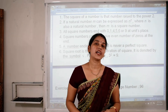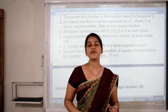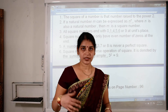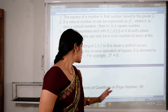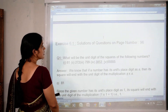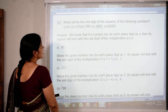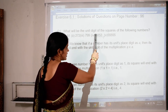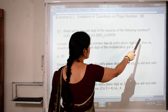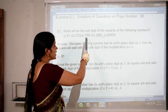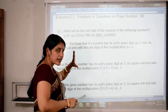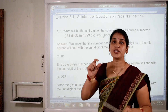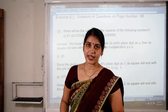Now we continue with Exercise 6.1. First, we will do exercise 6.1, and then remaining properties of square root we will see afterward. Let's see the first question: What will be the unit digit of the squares of the following numbers? You are asked that if given numbers are squared, what will be the unit place digit?